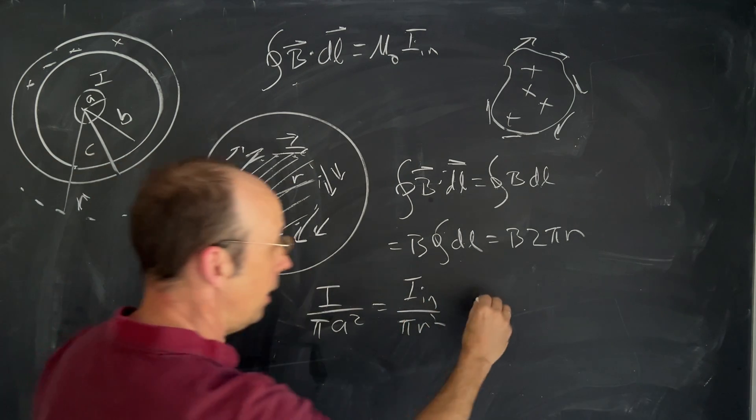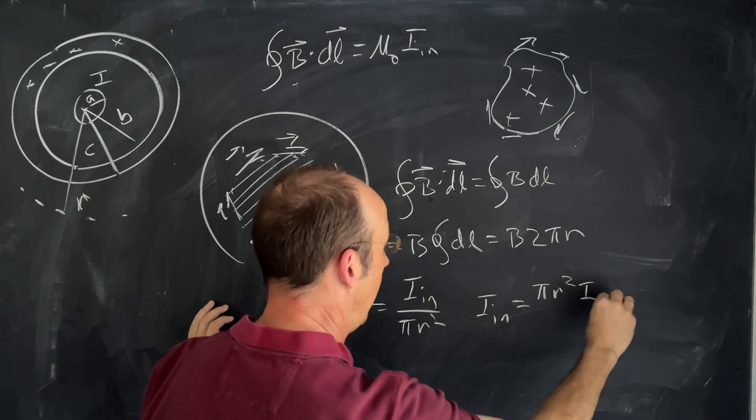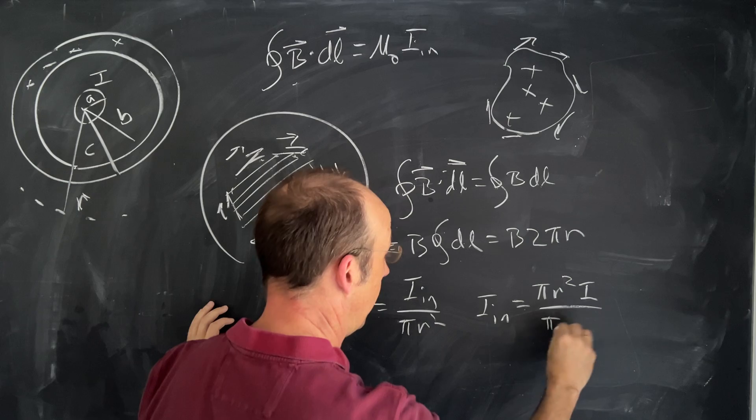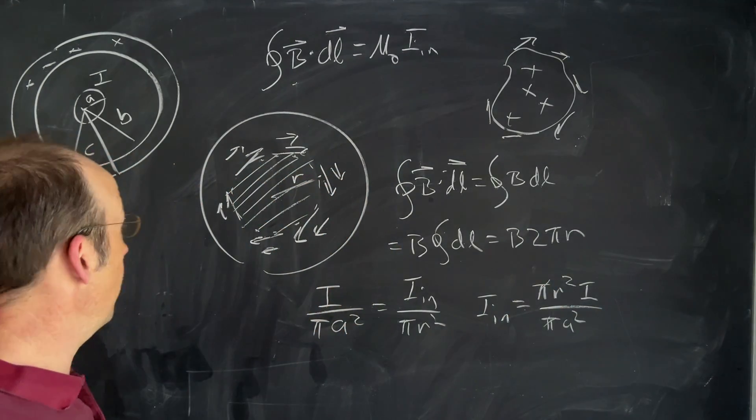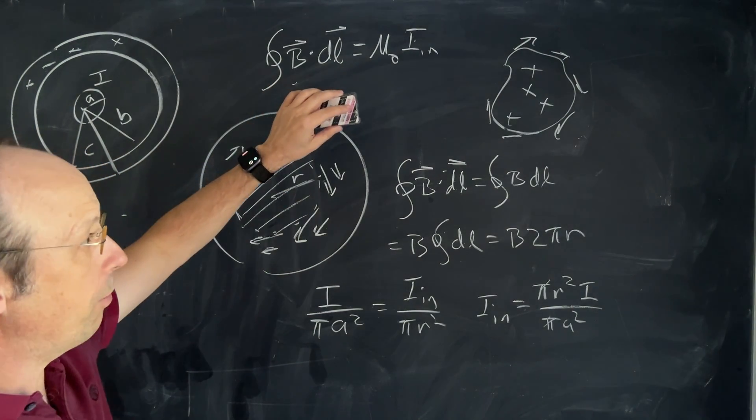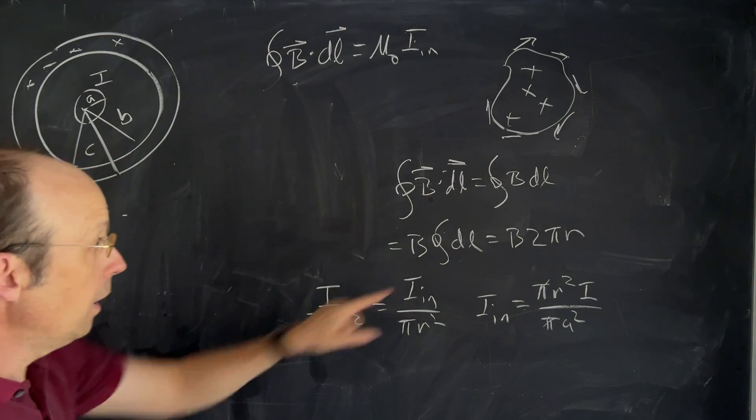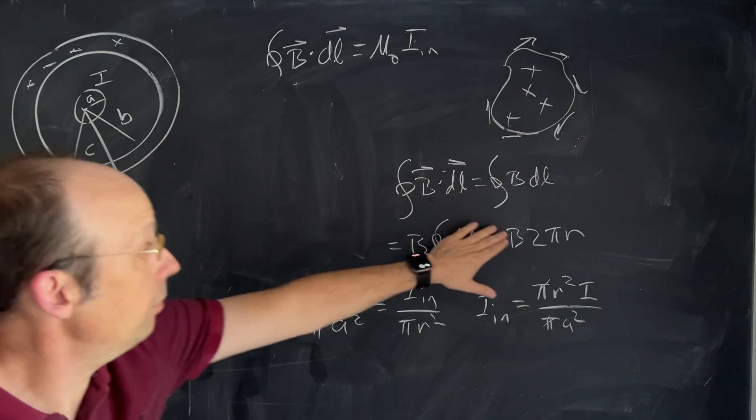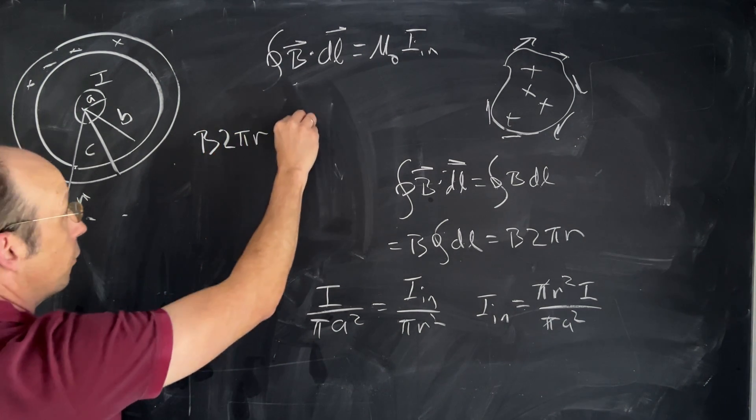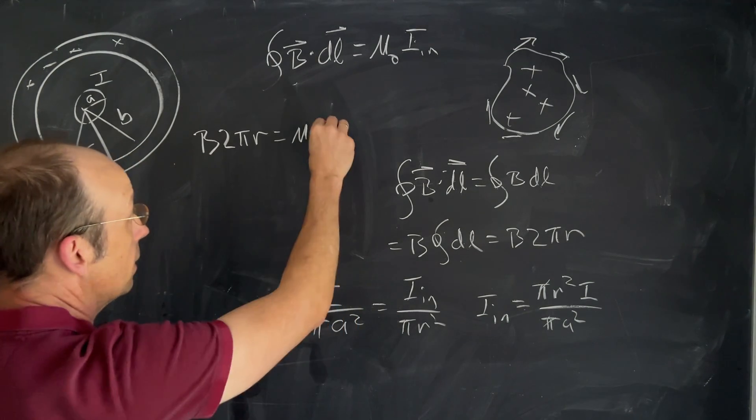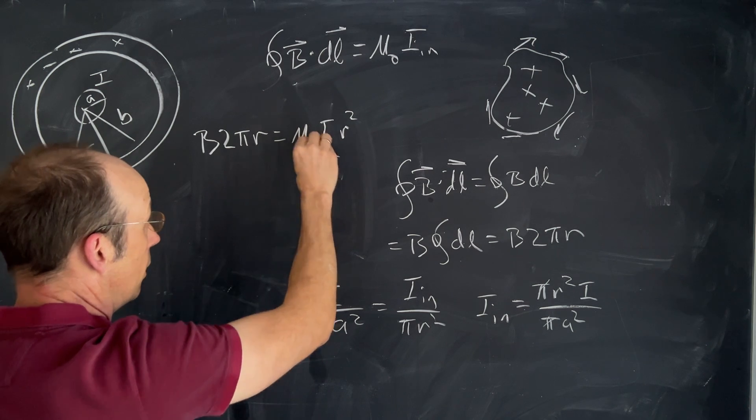is equal to IN over the area of this which is πR². So if I solve this for IN I get IN equals πR² I over πa². The π's cancel and now I have that. So now we can put the whole thing together. I'm going to erase just to give myself some more room.